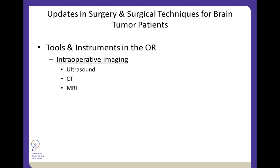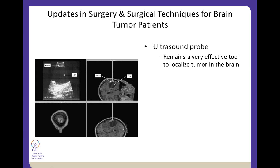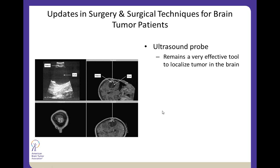Other instruments include intraoperative imaging modalities — ultrasound, CAT scan, or MRI used in the operating room. Ultrasound remains a very effective tool, particularly with tumors. Intraoperatively, you can put the probe right on the brain after craniotomy and dural opening to see superficial structures, cystic tumors, and deeper structures. Just like a navigation system, it can direct you to the lesion and allow a smaller opening. Once you've resected the lesion, you can use the probe again to check for any residual tumor not visible directly under the microscope.